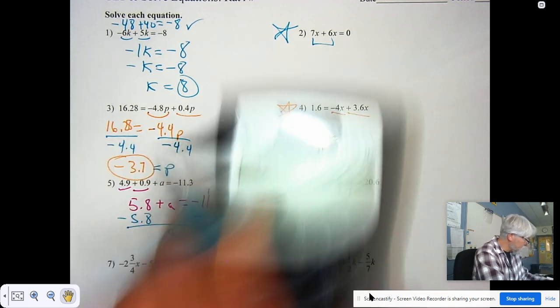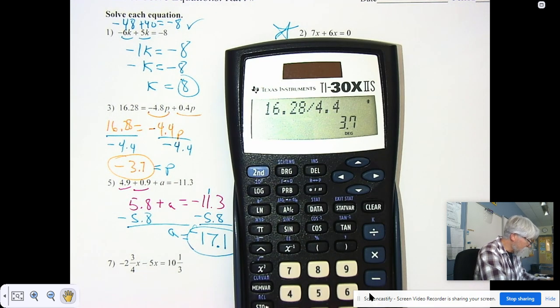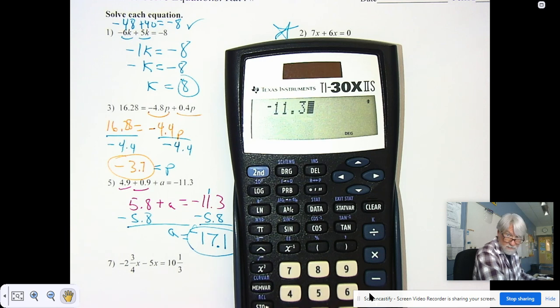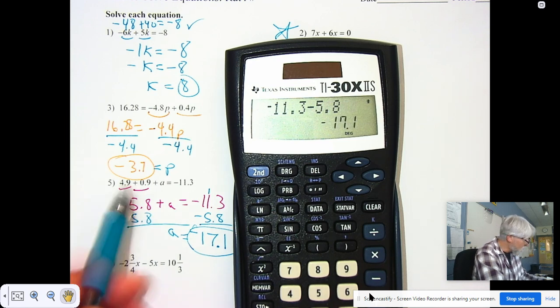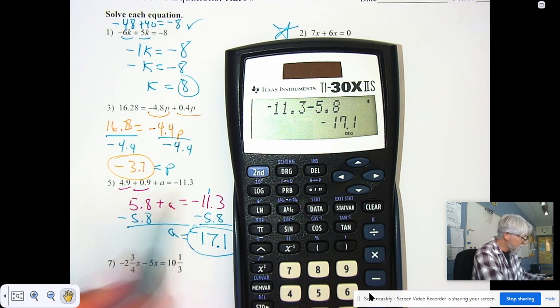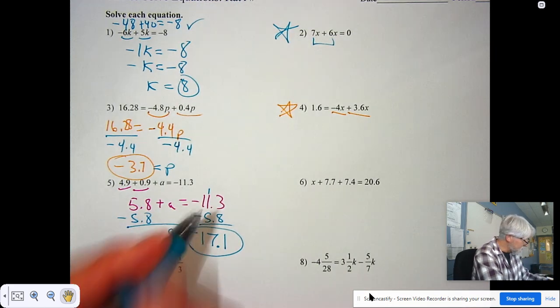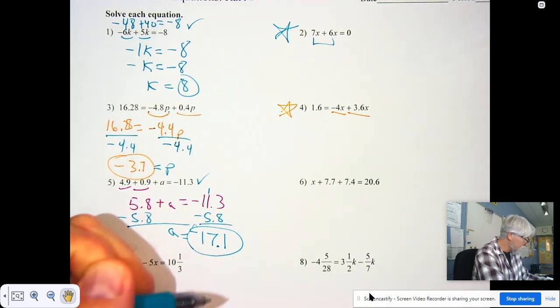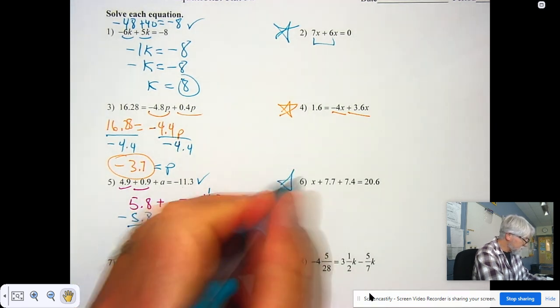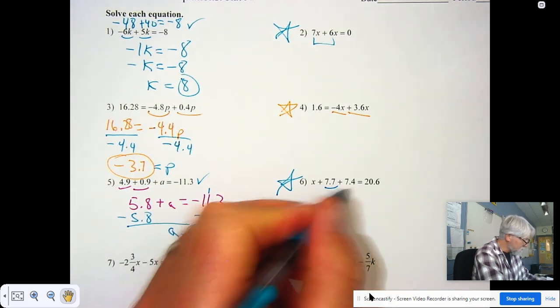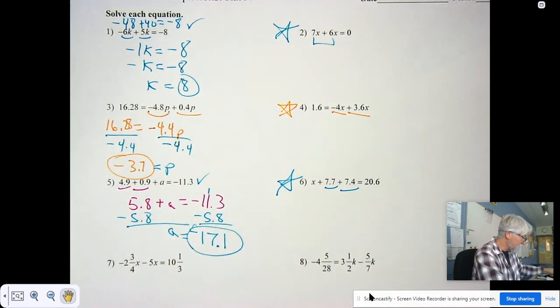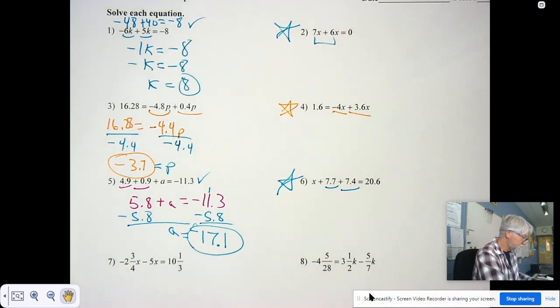So I am going to get negative 17.1. You can do that on your calculator too, right? So we've had negative 11.3. From that, we subtracted 5.8 and we get negative 17.1. Add that to the 4.9 and the 0.9 and you'll get negative 11.3. It does, in fact, check. So when you do number six, you're going to combine the like terms and subtract that from the 20.6 to find out what x equals.